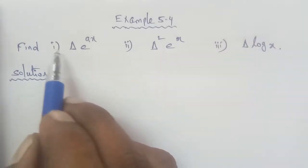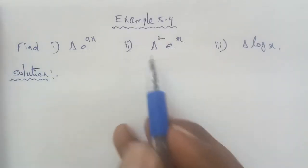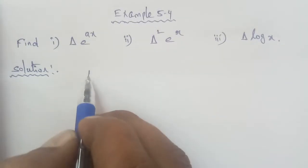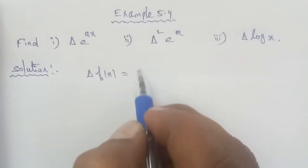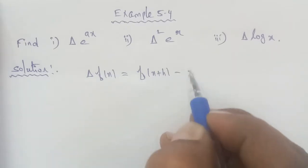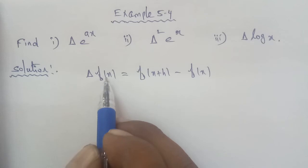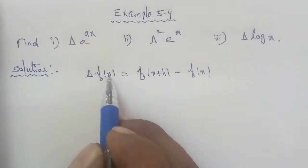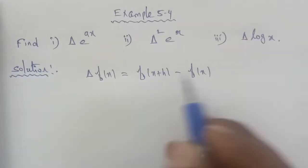So you would have answered the complete questions here. Now, the forward difference operator formula will be applied. The formula is: delta f of x is equal to f of x plus h minus f of x. That is the formula — delta f of x equals f of x with x term added 1 h term, minus f of x.